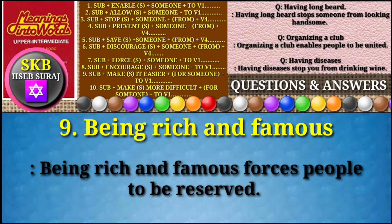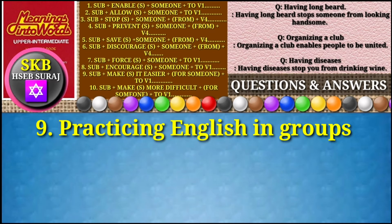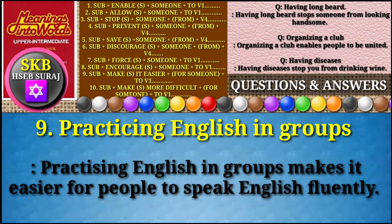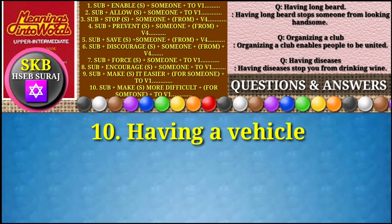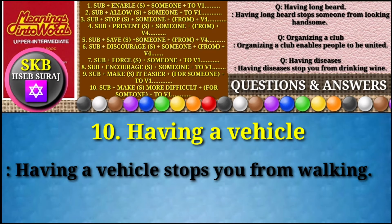Question number nine: 'being rich and famous.' Answer: Being rich and famous forces people to be resolute. Question number nine — alternate: 'practicing English in groups.' Answer: Practicing English in groups makes it easier for people to speak English fluently.